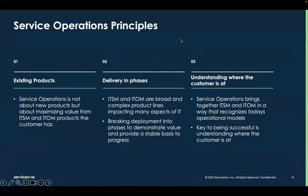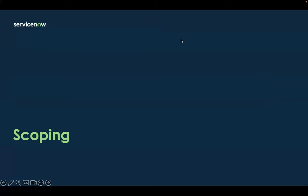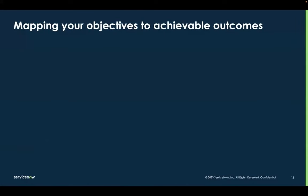Before getting into the nuts and bolts of the recommended implementation sequence, I want to talk about scoping, because this really links into understanding where the customer's at and delivering in phases. It's very important to map the objectives — what the customer wants to achieve — to a set of achievable and, I'd add, measurable outcomes, because that allows the customer to express the value they've achieved and also gives permission to continue moving forwards.